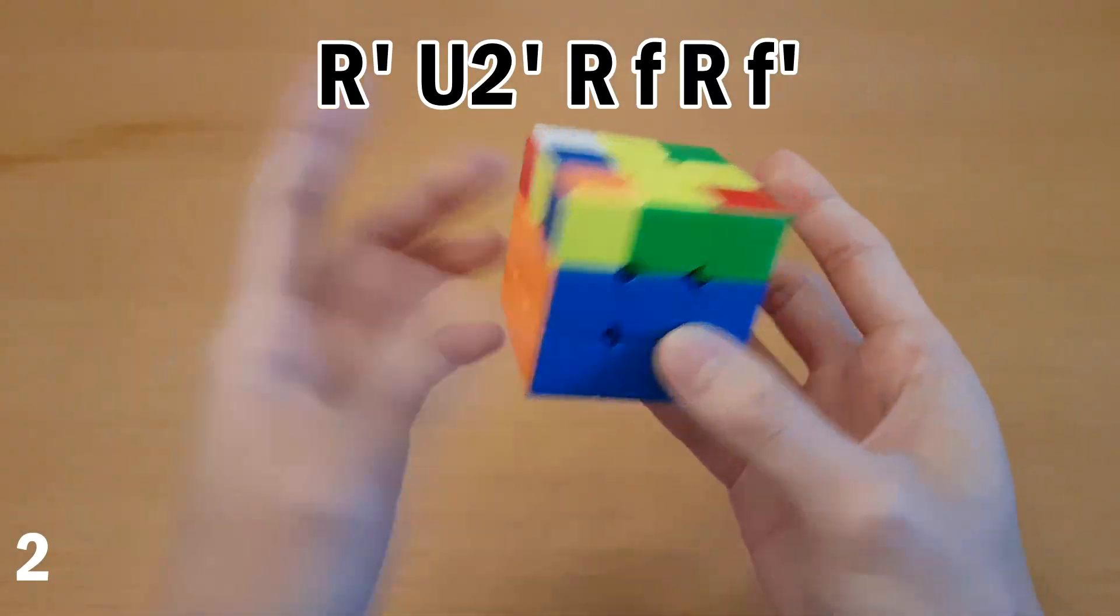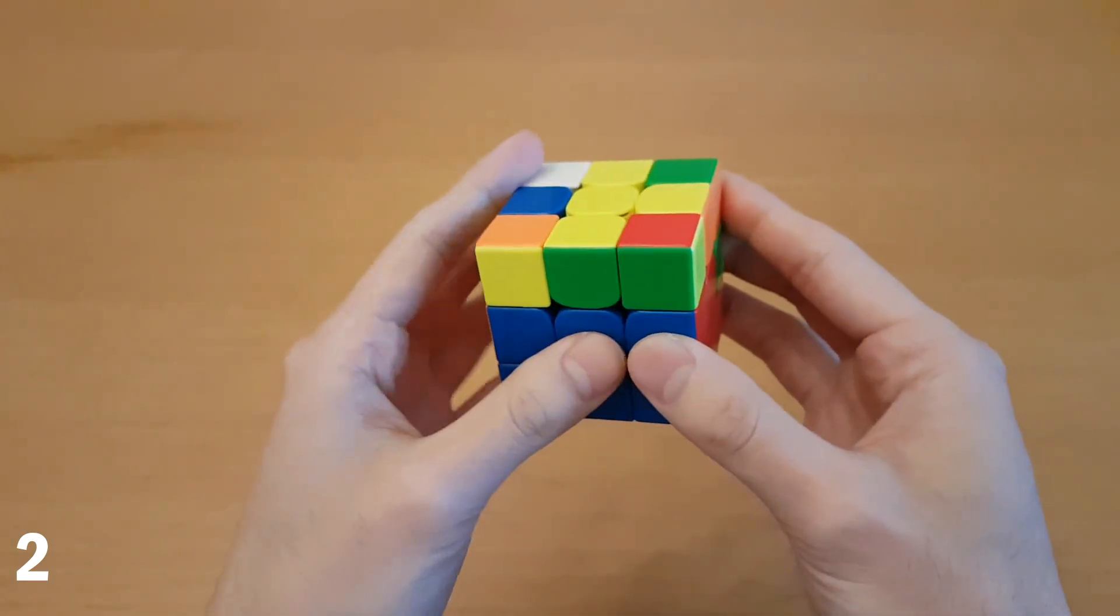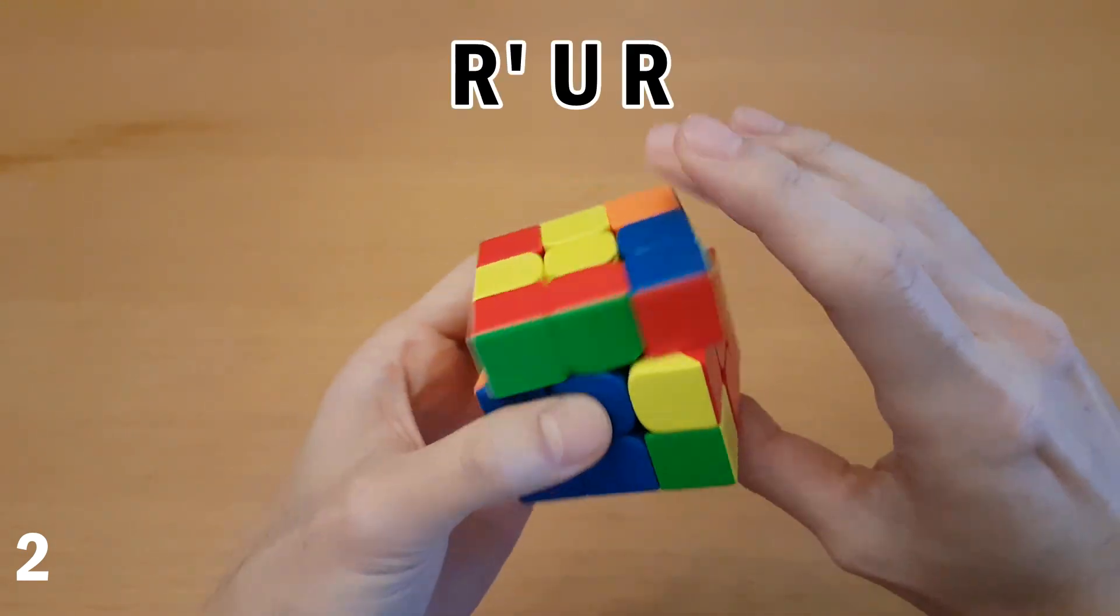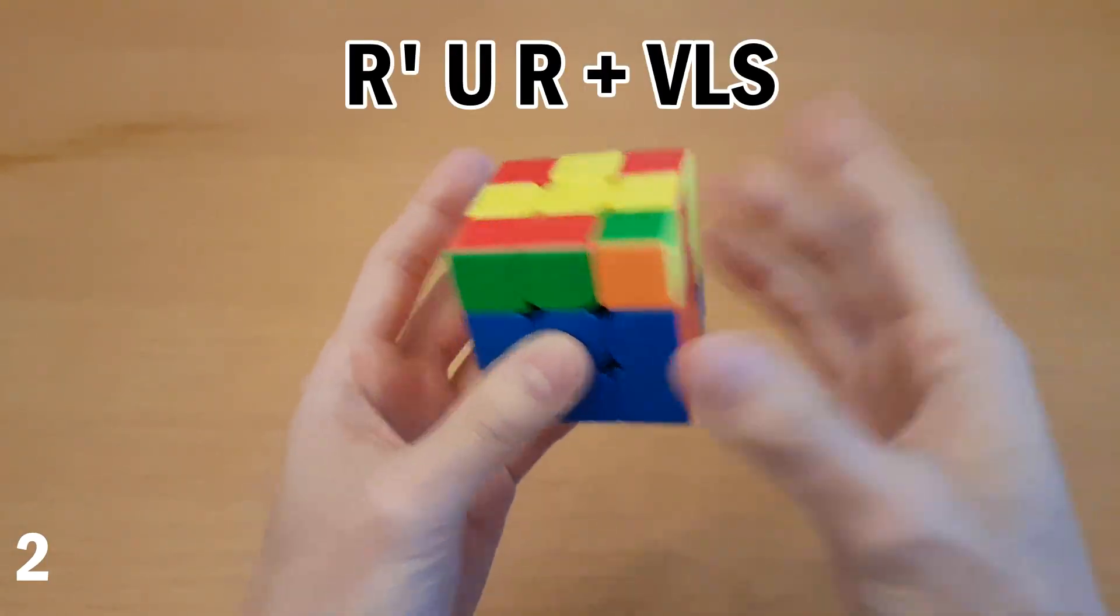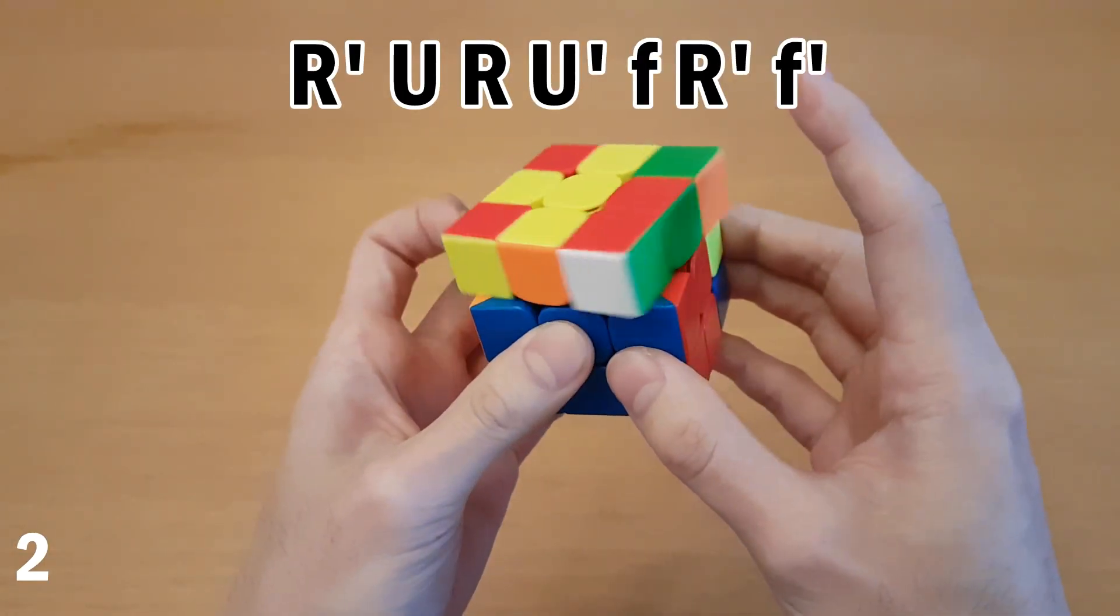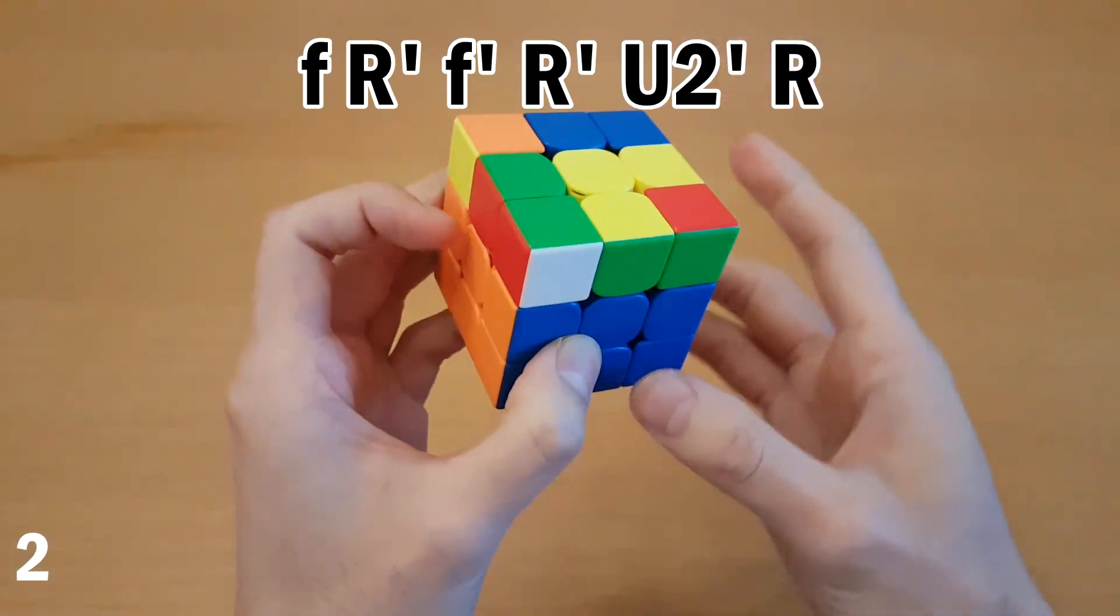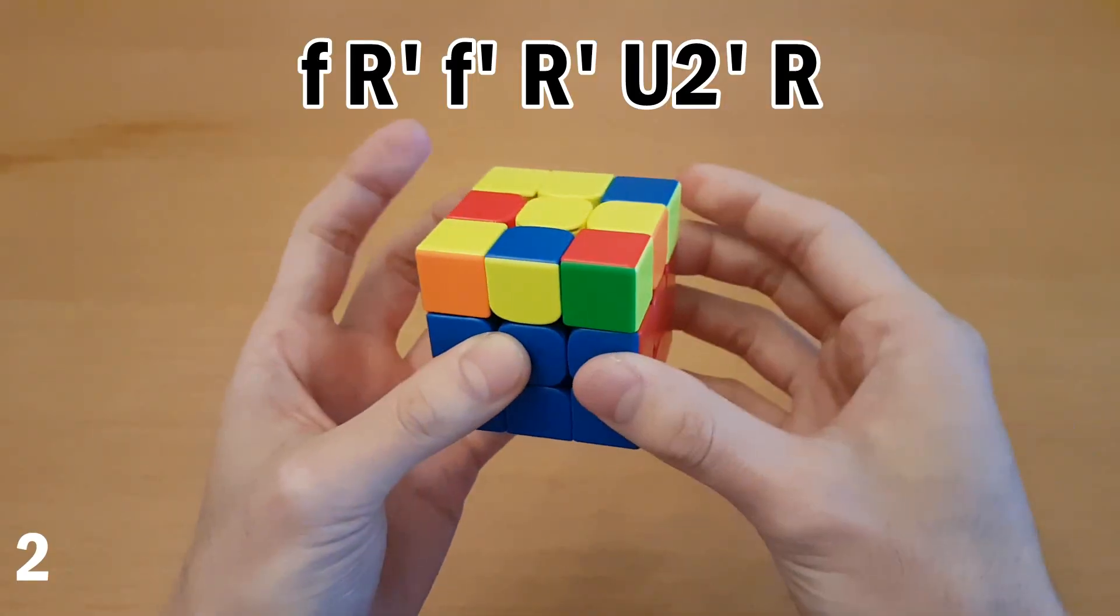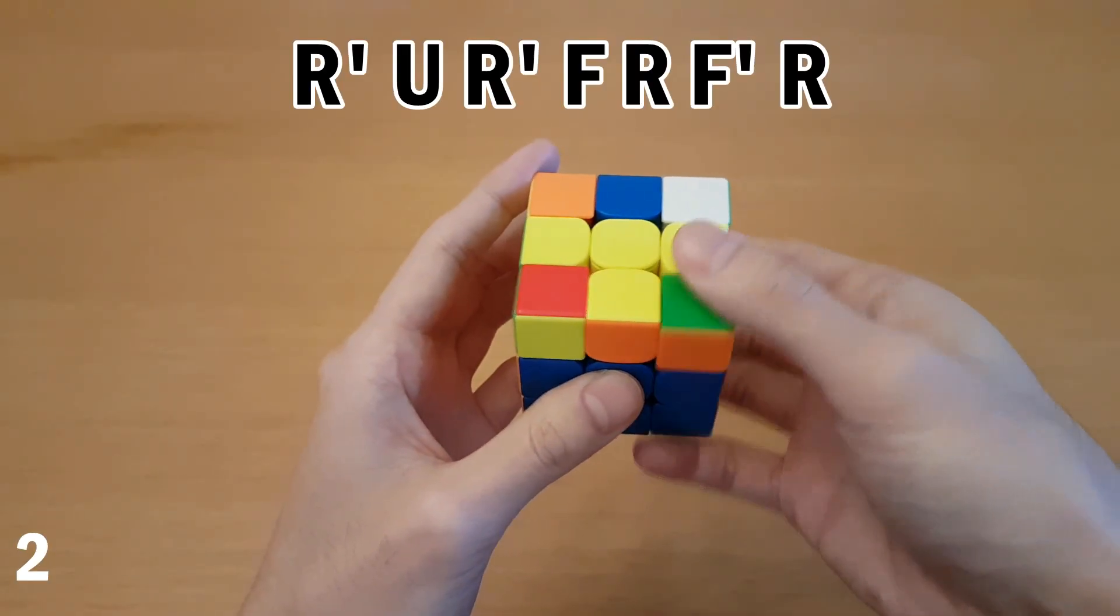Again, I think if you're going to learn one way of solving this case, this is the one to go for, but there are other ways you could do this. Especially if it's last slot, it can be good to take it out like this, as that gives you a paired case and you can go into some sort of VLS or winter variation. Or you could just regular insert from here. You could also take this out like this, and then that gives you a different edge orientation. You can either just insert or you can do some kind of trick to skip OLL. And there is also this one.